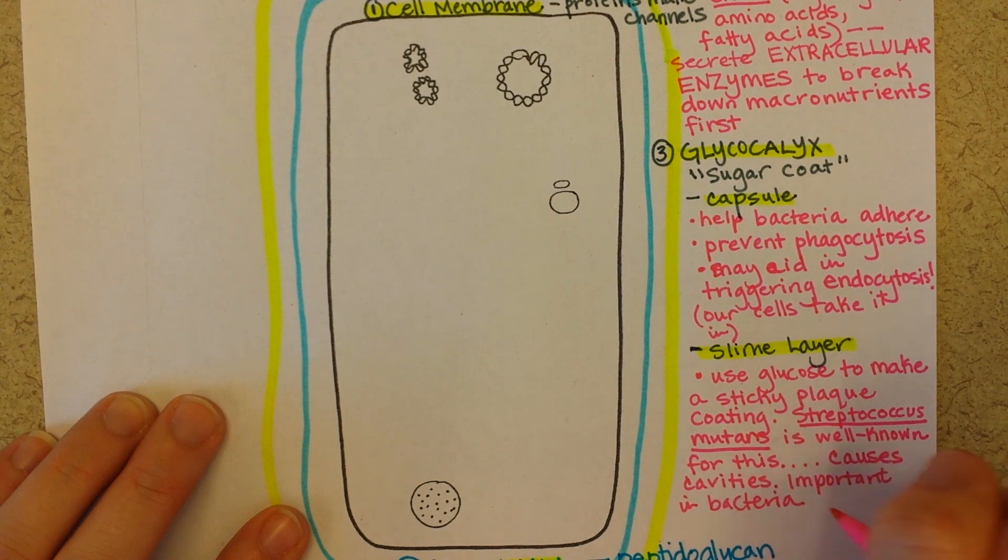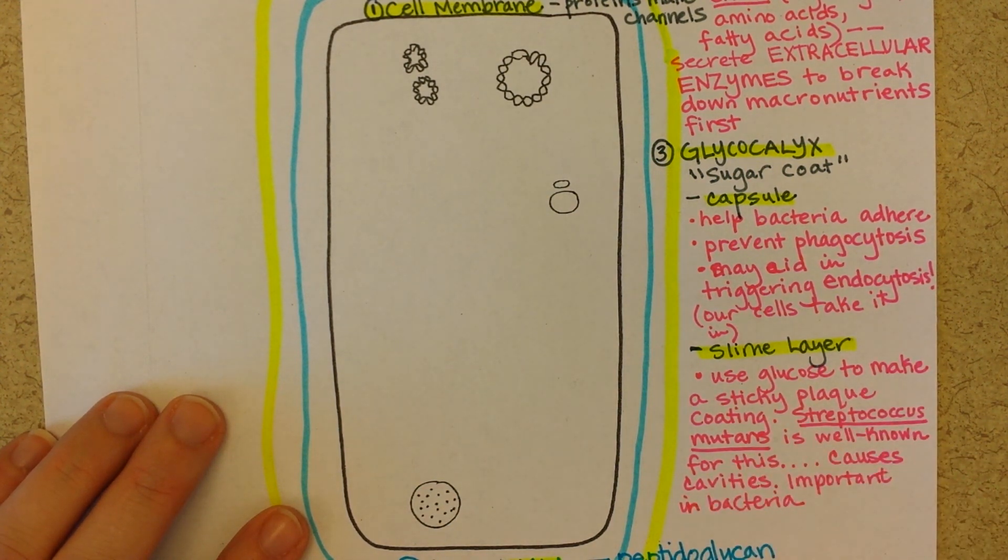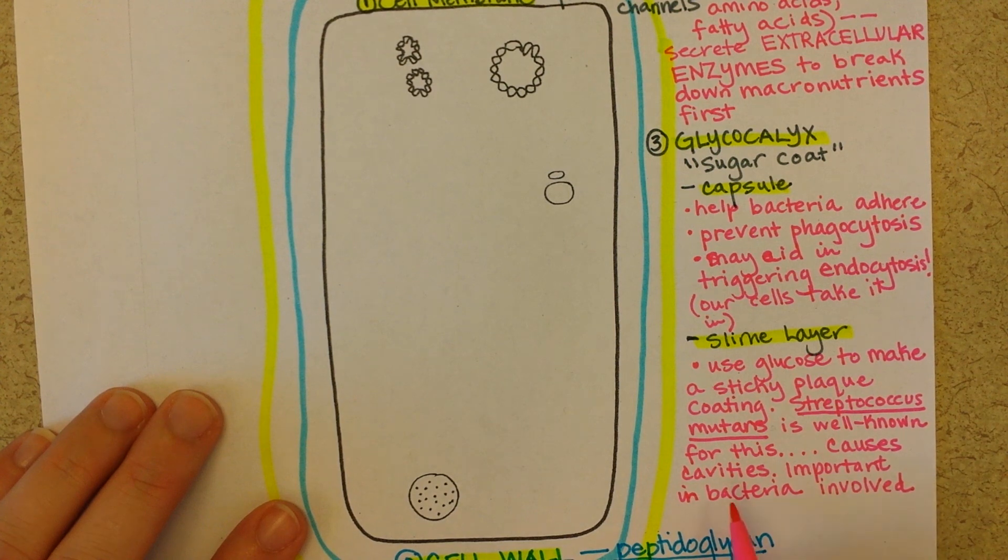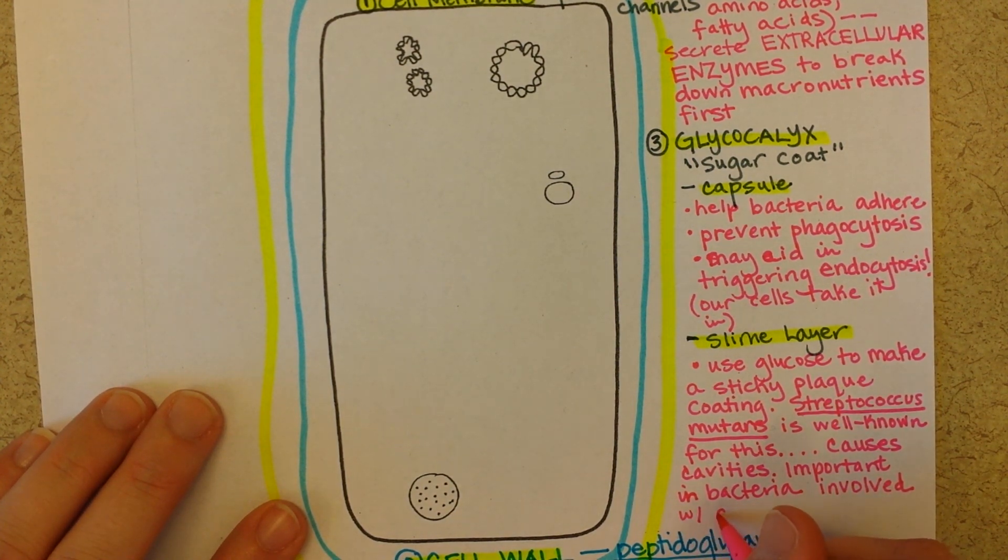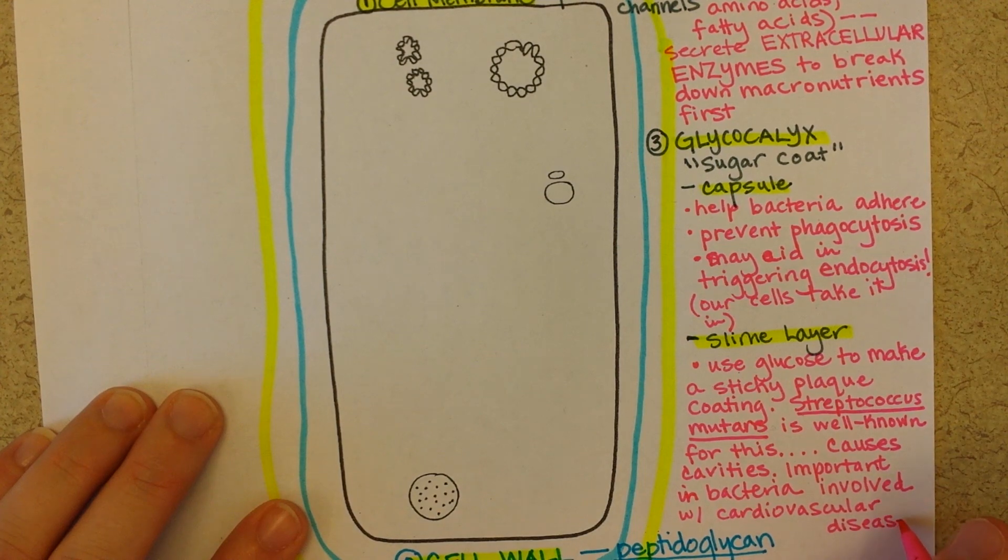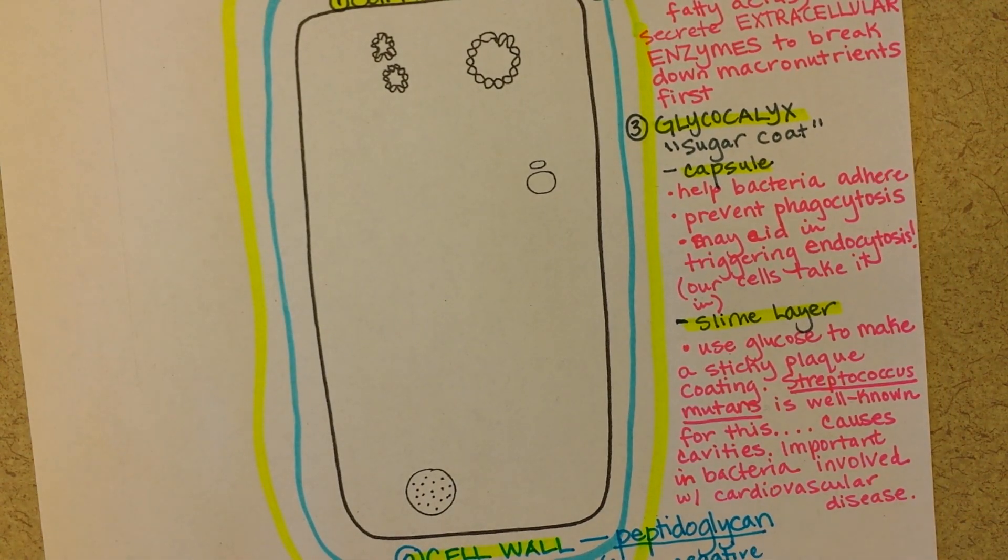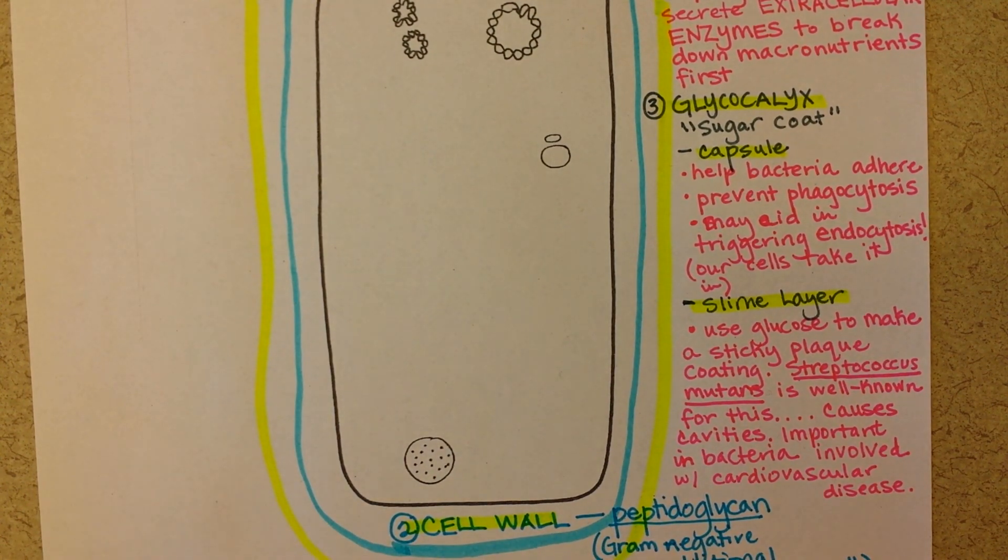And we're finding that this is the ability to make a slime layer is also important in bacteria, that can grow in our circulatory system, either in our blood vessels or on our valve walls. So, all I'll put for now is it's important part of the pathogenesis of bacteria involved with cardiovascular disease. So, mouth health and heart health are very closely related. Okay, so we'll come back for part two.